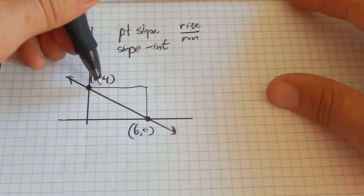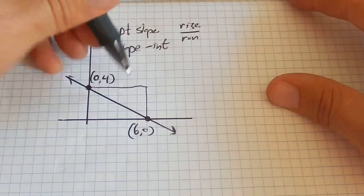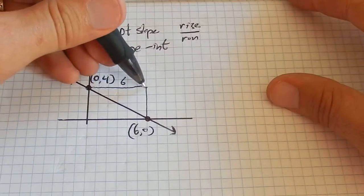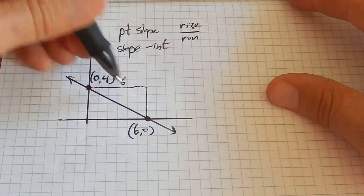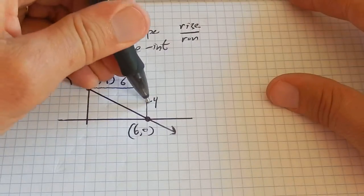So across, I'm going 1, 2, 3, 4, 5, 6. So I went over 6, and then I went 1, 2, 3, 4. I was up at 4, and I went down to 0. Down 4.